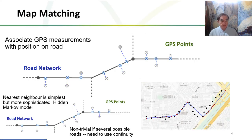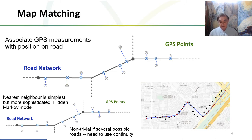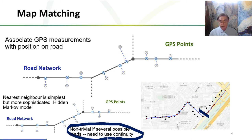Here is the map matching problem of mapping GPS signals to the position on the road, which is not trivial in itself — a standalone machine learning application — because the measurements are not precise and can possibly be associated with multiple roads when you have lots of roads close to each other. You have to use continuity: a car is not going to go back and forth between two parallel roads on a single trip; it will choose one. The red must be the actual location and the black the measurement. We want continuity — we don't want implausible switching between roads.